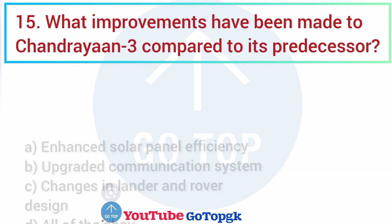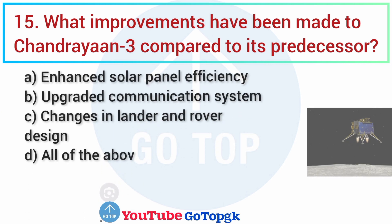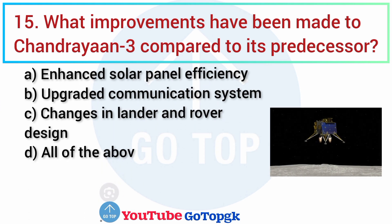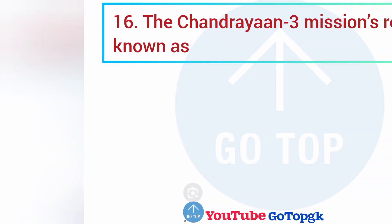Question No. 14/15. What improvements have been made to Chandrayaan-3 compared to its predecessor? Options: A. Enhanced solar panel efficiency, B. Upgraded communication system, C. Changes in lander and rover design, D. All of the above. Your correct answer is option D: All of the above.